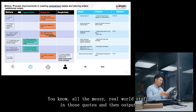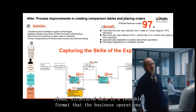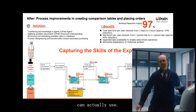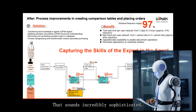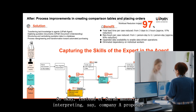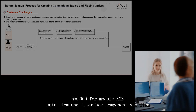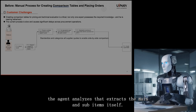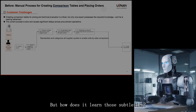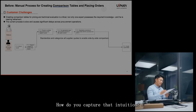It's fundamentally designed to understand the intent behind the words, just like Sarah did. Instead of Sarah manually interpreting a quote — say, 'company A proposes 5,000 yen for module XYZ, main item: interface component, sub item' — the agent analyzes that and extracts the main and sub items itself. But how does it learn those subtleties? It's a combination of approaches.